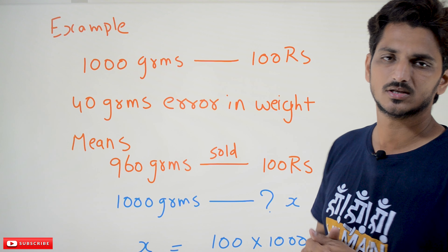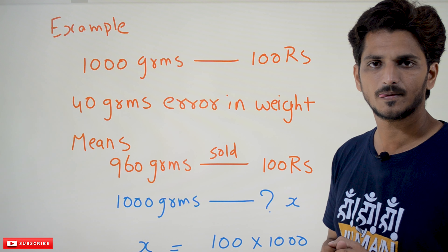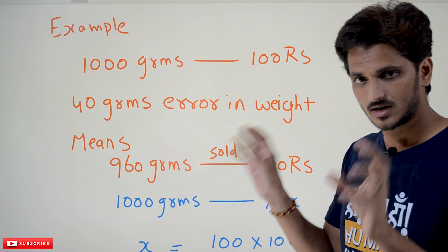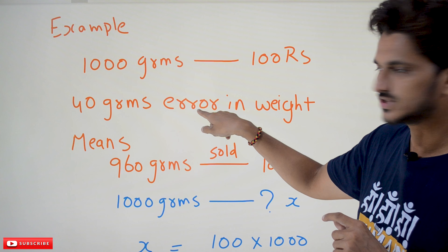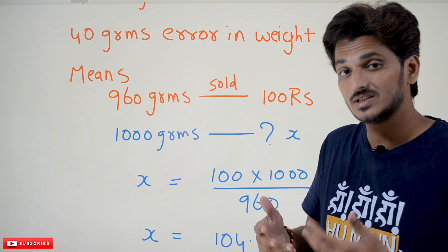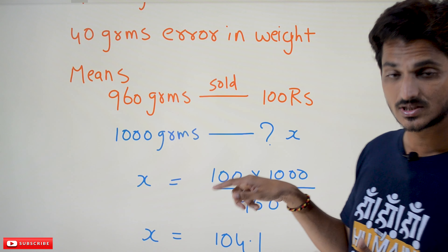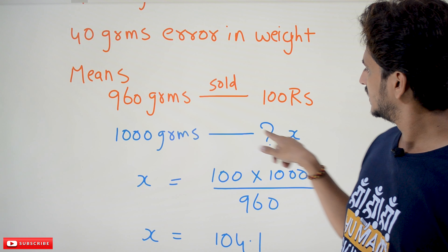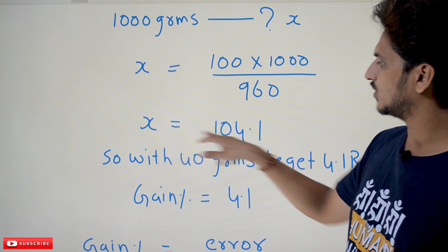1000 grams sold at 100 rupees means the actual cost price of 1000 grams is 100 rupees. But he made a 40 gram error in weight, meaning he is selling 960 grams at 100 rupees. So if 960 grams is sold for 100 rupees, what amount would you get for 1000 grams? Let x be that amount. x equals 100 multiplied by 1000, divided by 960.